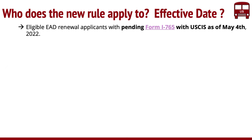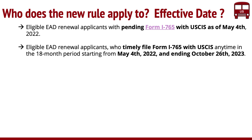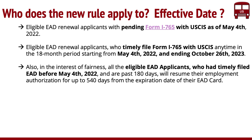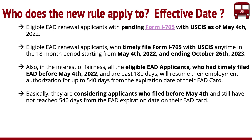Who does it apply to? It's applicable to anybody with a pending I-765. So if you applied for EAD renewal and it's pending with USCIS, that's one thing. Second, for anyone who filed timely — meaning before the expiration of their EAD — with USCIS any time in the 18-month period starting from May 4th until October 26. Also in the interest of fairness, it is applicable to eligible EAD applicants who had timely filed before May 4th and whose EAD or 180-day extension expired — they can resume their employment authorization. So essentially they're considering all applicants who filed before May 4th and still have not reached the 540 days.